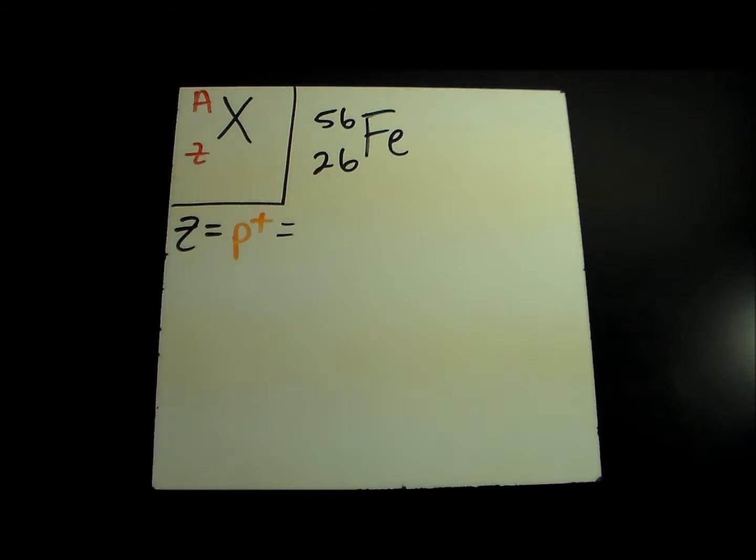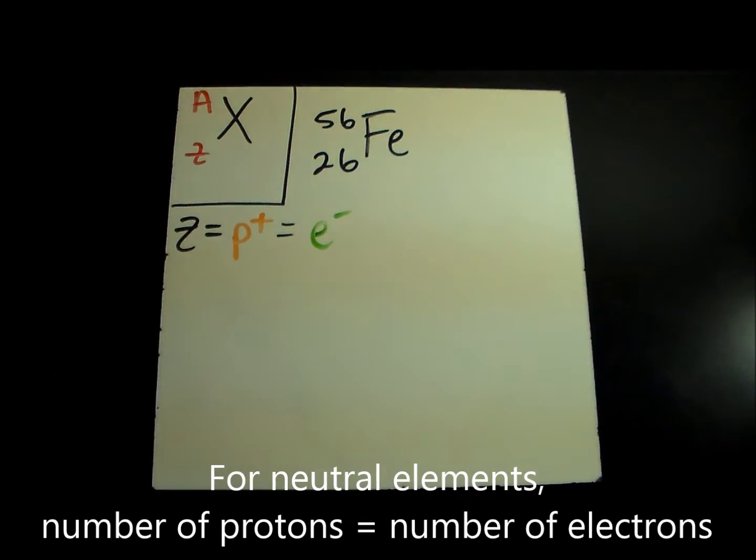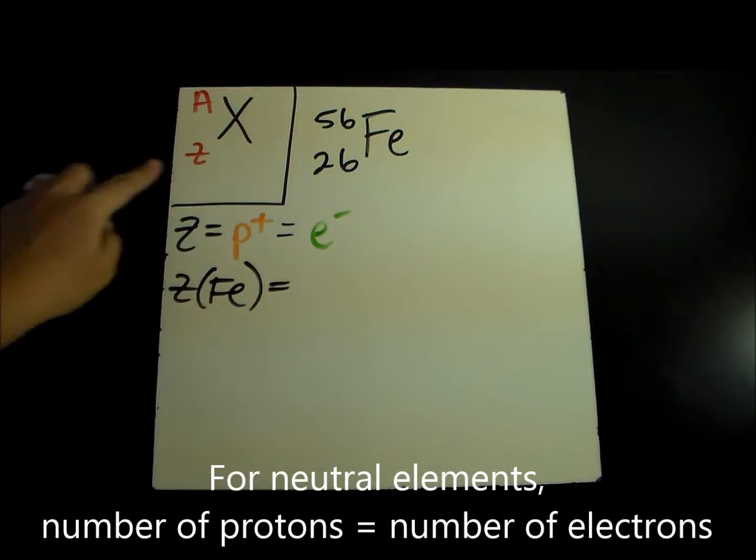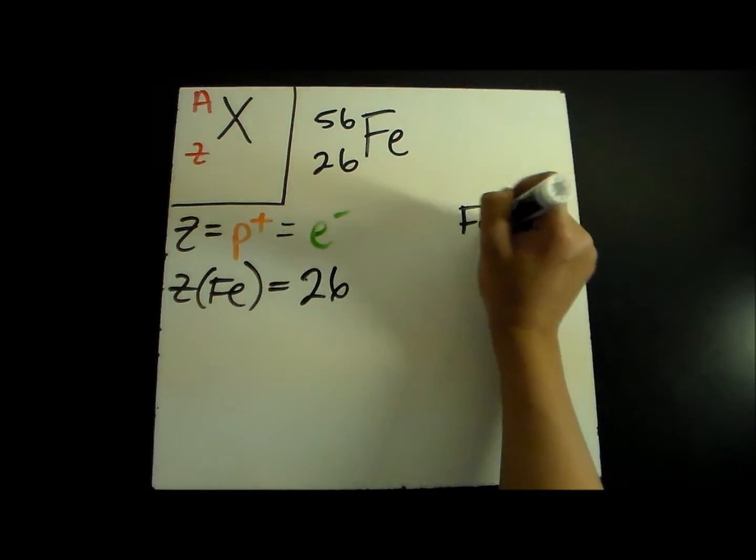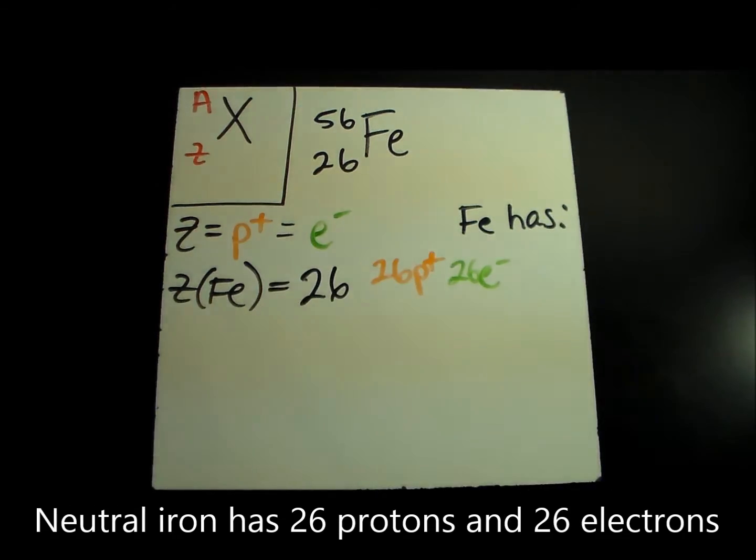The atomic number Z is equal to the number of protons. If the element is neutral, Z is also equal to the number of electrons. So since Z equals 26 for iron, iron has 26 protons and 26 electrons.